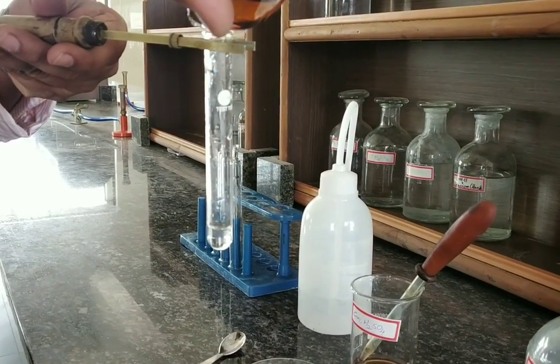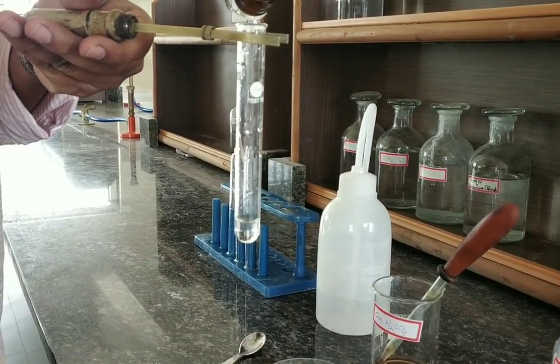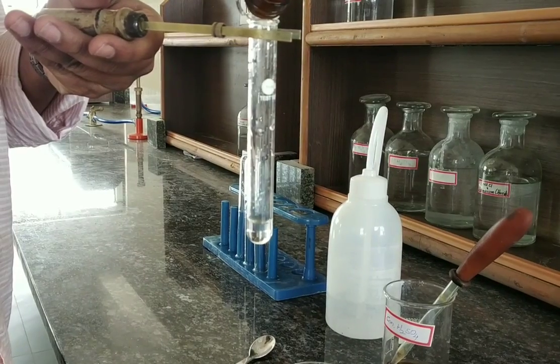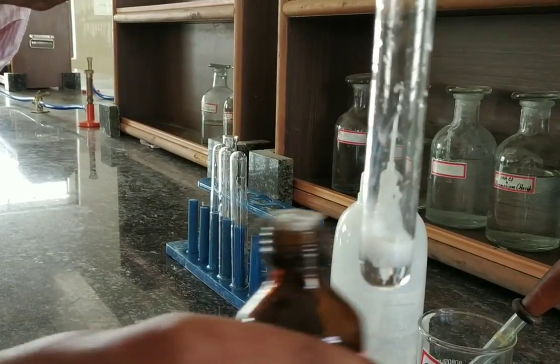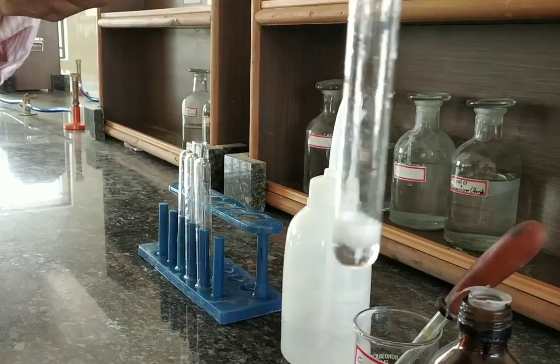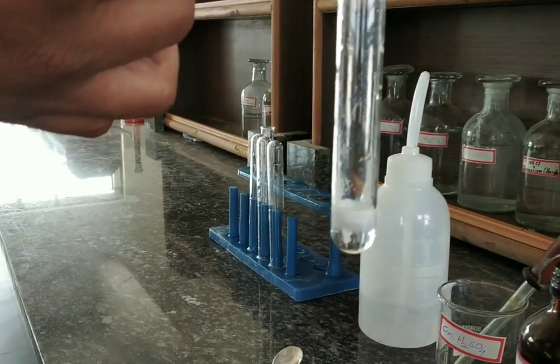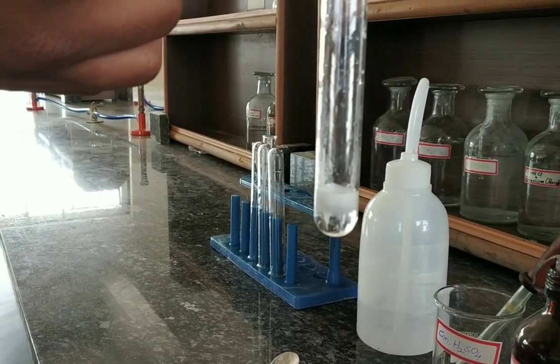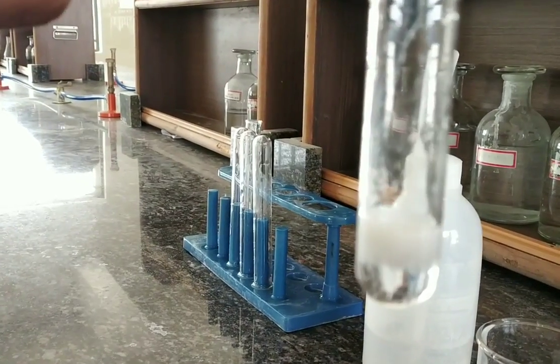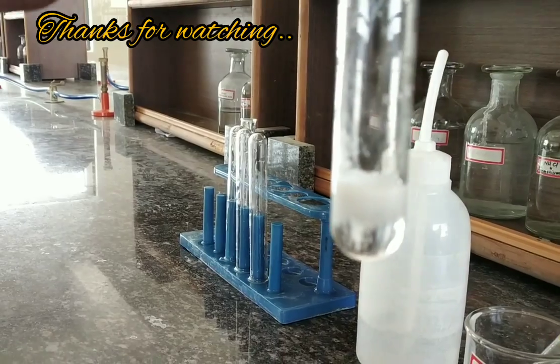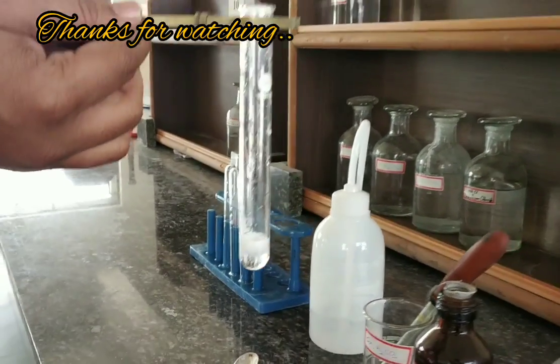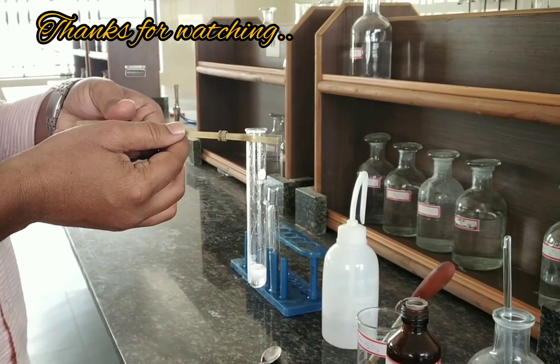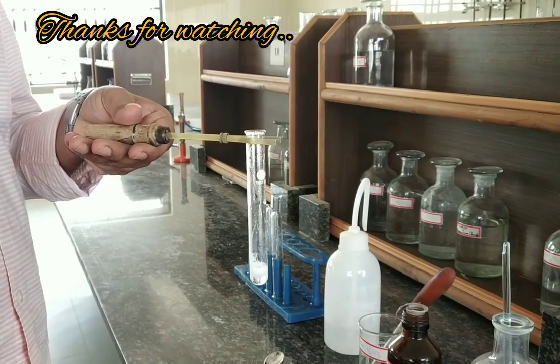After addition of silver nitrate solution, you can observe a white precipitate in the test tube. This confirms the confirmative test for Cl minus. Here, after addition of AgNO3, it reacts with the Cl minus ions and forms AgCl.